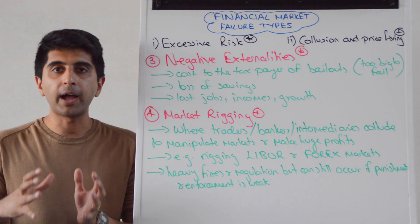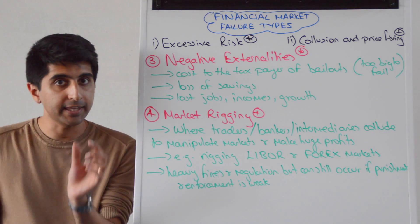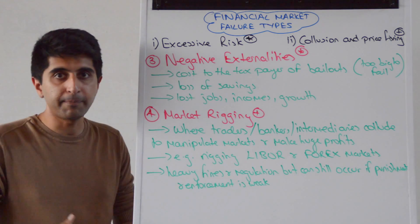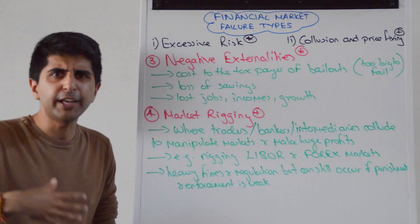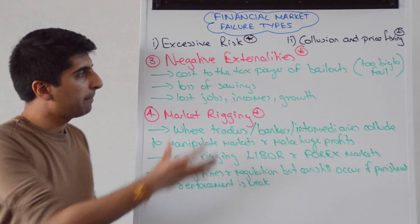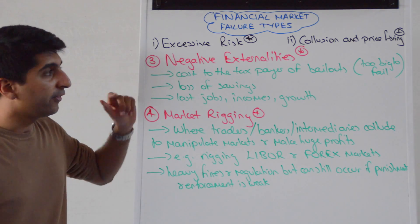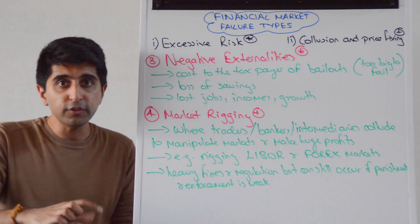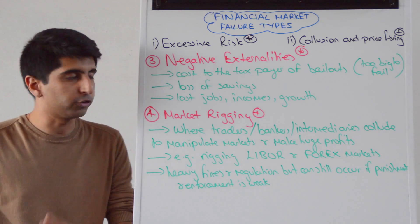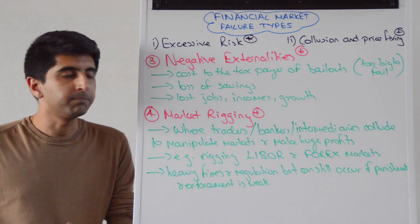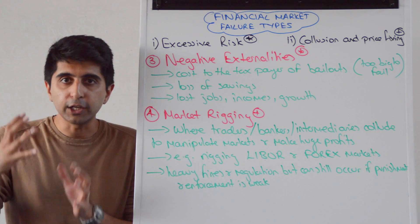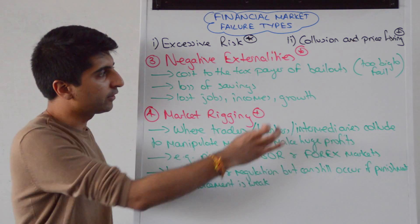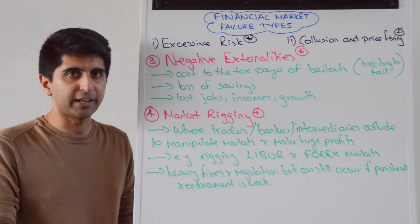Negative externalities might be being ignored by commercial bankers who are taking excessive risk. What kind of negative externalities? The cost to the taxpayer of bank bailouts — the idea of being too big to fail — ignoring the impact on the taxpayer having to pay for huge bailouts, the loss of individual savings, the lost jobs, the lost incomes, the lost growth, not just in the financial industry, but throughout the entire economy. These consequences might well be ignored by commercial or investment bankers who take excessive risk, and as a result they overproduce very risky financial assets.